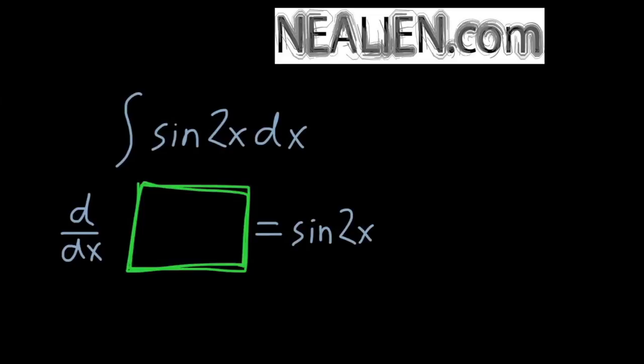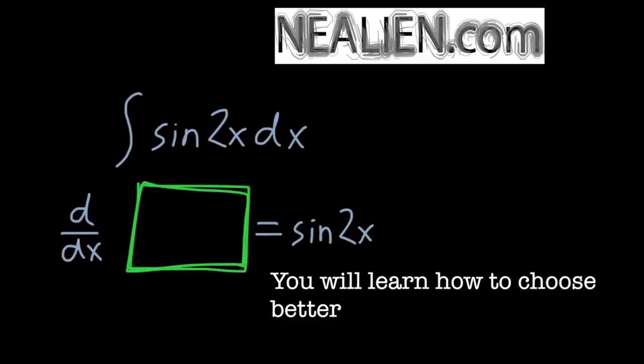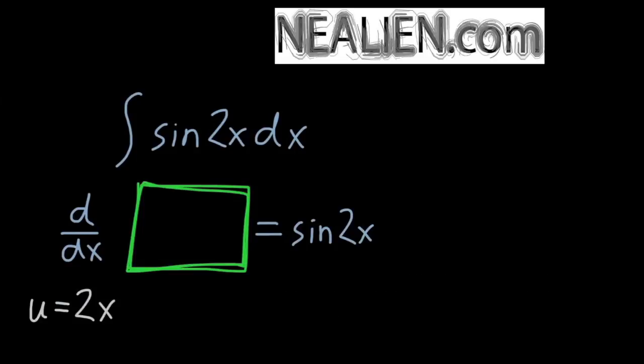So we're going to try and fill in that green box with something that when we take the derivative of it will give us sine of 2x. The technique that we'll use is called u-substitution. So I'm going to pick u equals 2x. It takes a little bit of practice to develop which choices you make for u and which are going to be useful. Sometimes you choose something and it doesn't work out. Sometimes you choose something and it works right away. So I'll say u equals 2x.